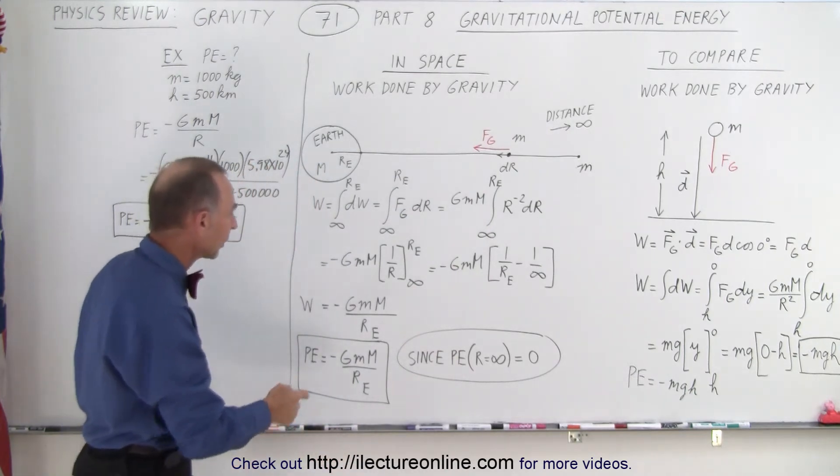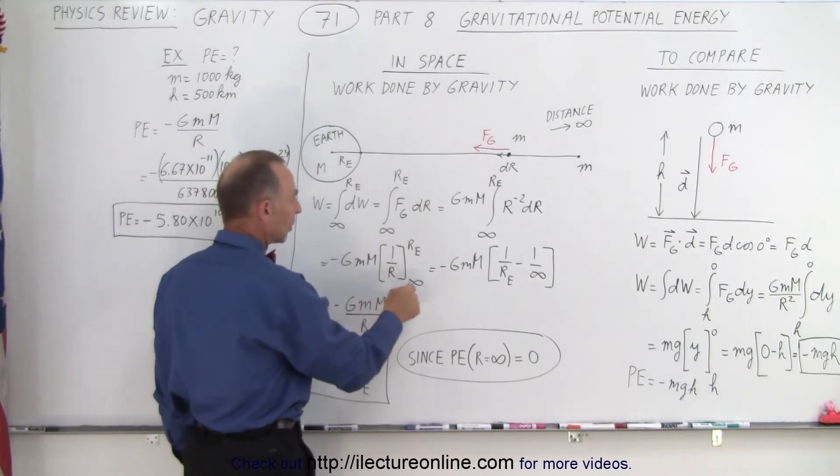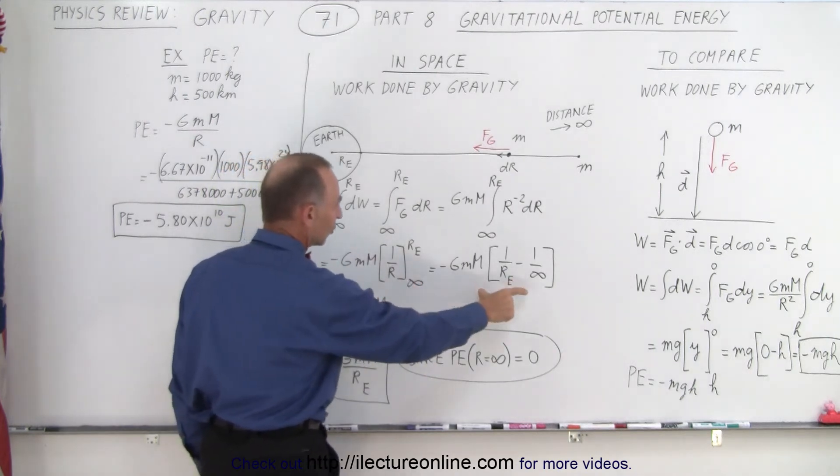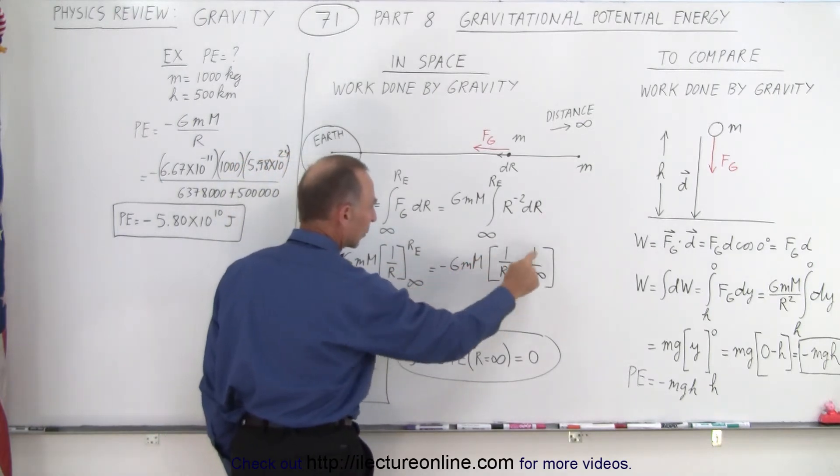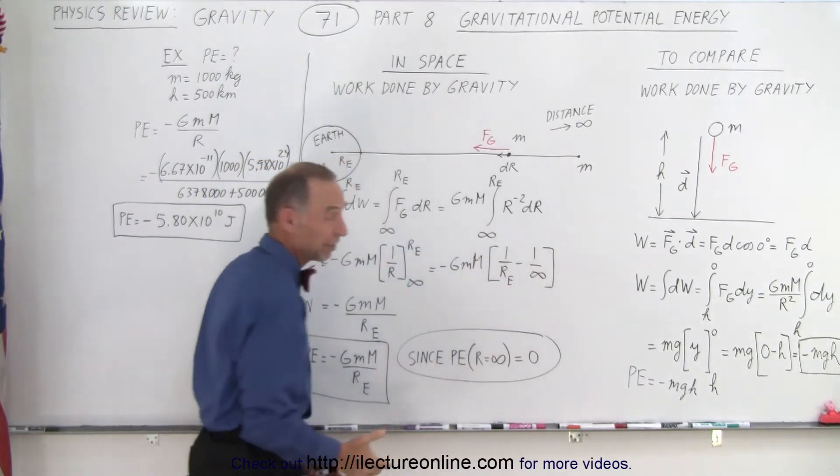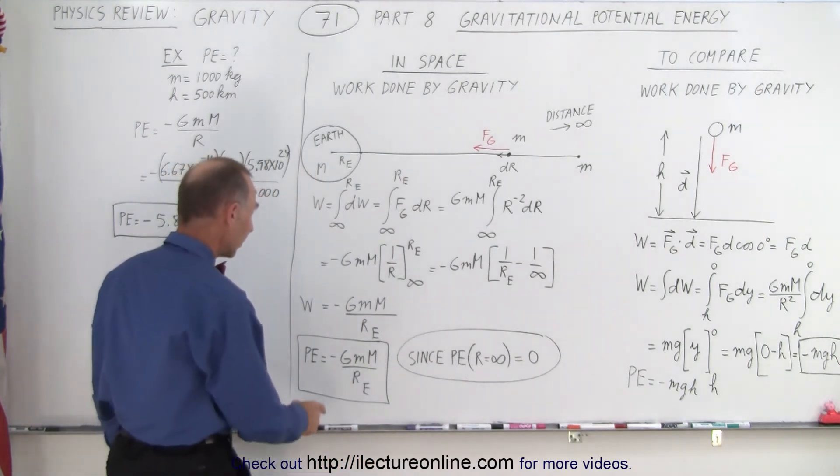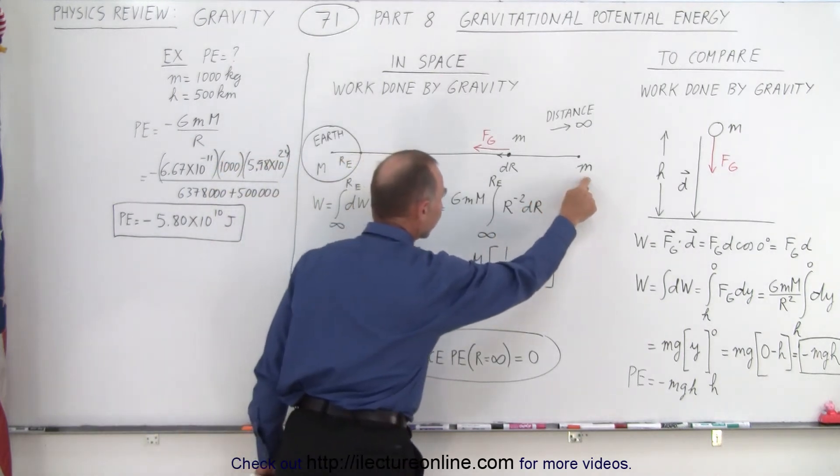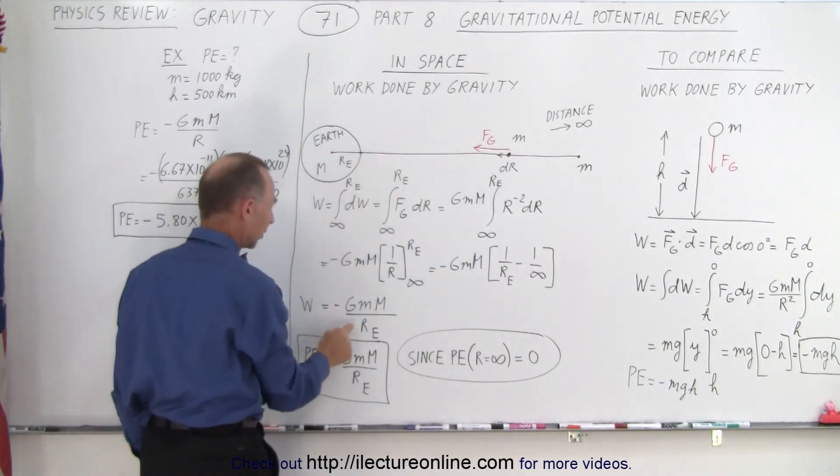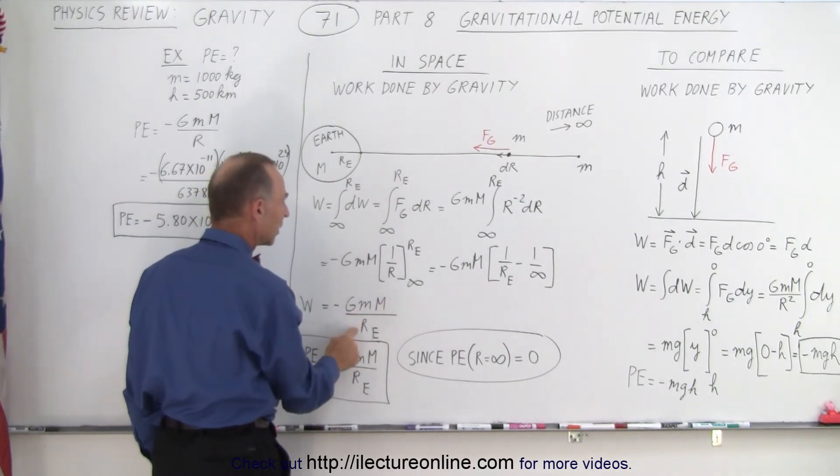When we integrate that, we get the negative one over r. We put the negative in front, we plug in the limits. And so notice that we plug in the upper limit, we get one over radius of the earth. Plug in the lower limit, we get one over infinity. Of course one over infinity is essentially zero. And so we end up with the work done by gravity to pull an object from very far away all the way to the surface of the earth is equal to this: minus G little m big M over the radius of the earth.